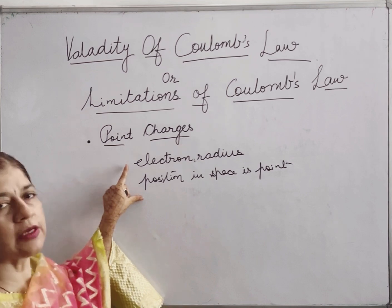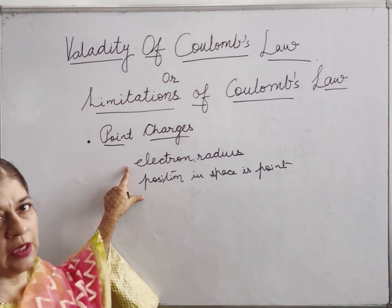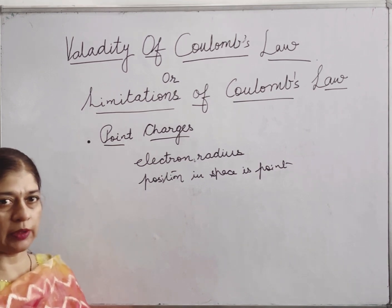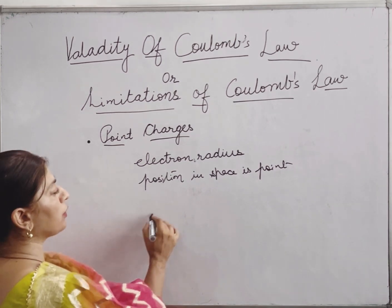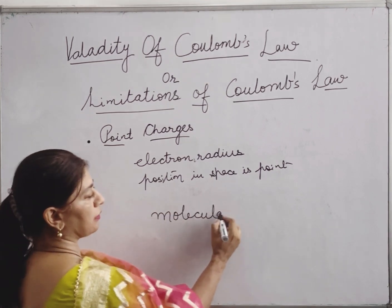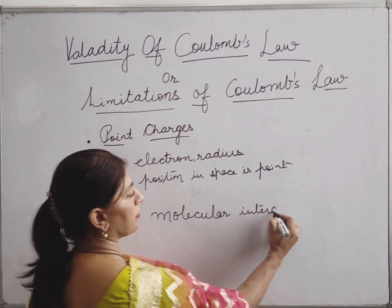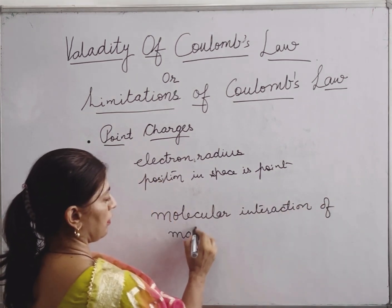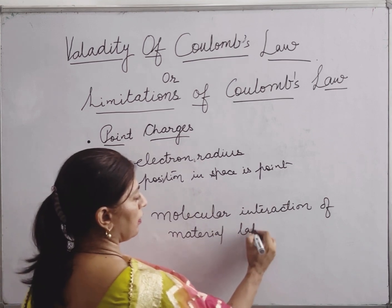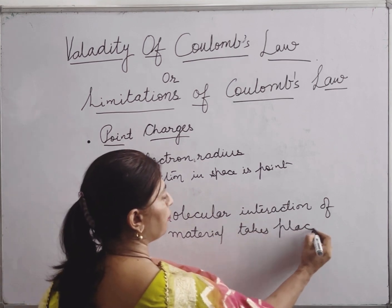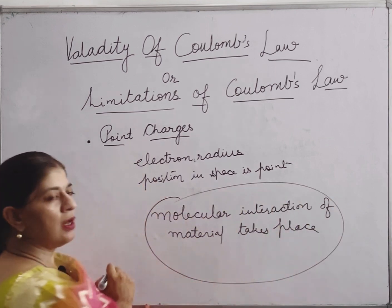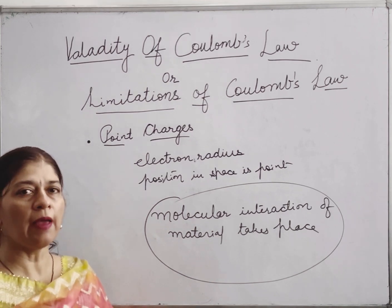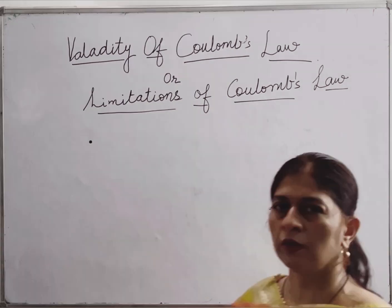If the size increases above the electron radius — if it is not a point charge — then Coulomb's law is not applicable. In that case, the molecular interaction of the material takes place. Because of this molecular interaction, other forces also come into play, and that hinders the applicability of Coulomb's law.